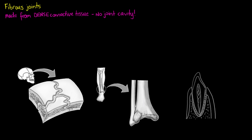So we have a mixture of amphiarthroses, being able to move just a little bit, and synarthroses, which are predominating and cannot move at all. So there we have our mix of amphiarthroses and synarthroses.